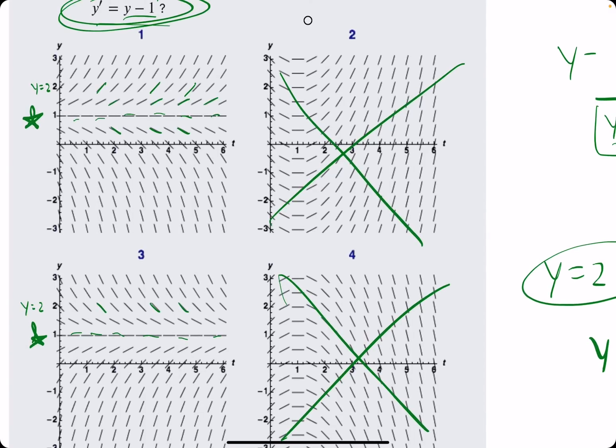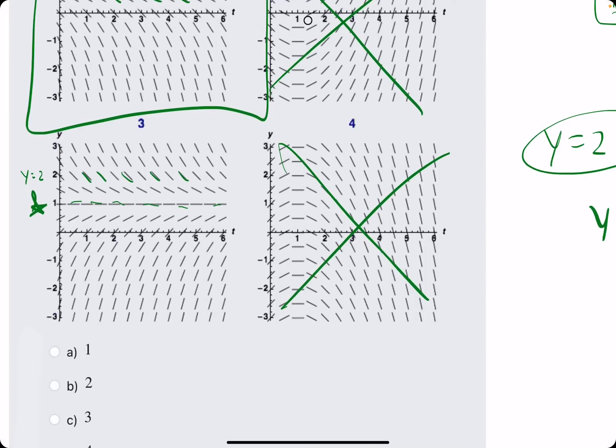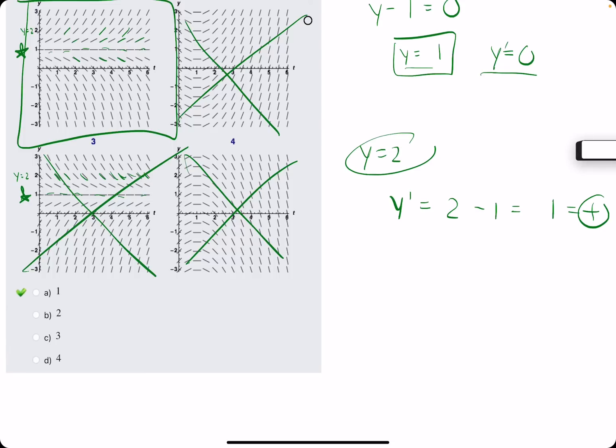Which graph has positive slopes at y = 2? That would be option 1, because 3 has negative slopes at y = 2. So 1 is our answer.